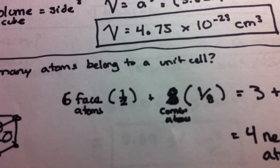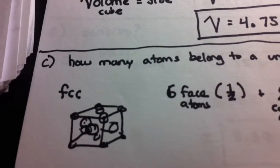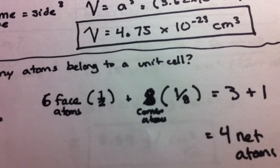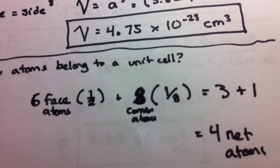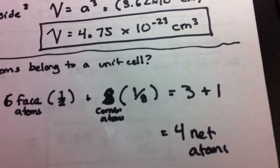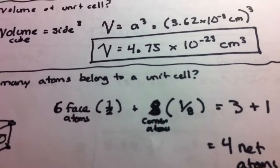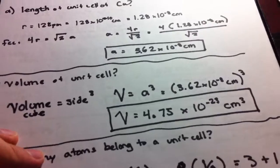And we have eight corner atoms, one, two, three, four, five, six, seven, eight. And each one will have eighth of an atom. So it's going to equal out to three plus one or four net atoms in a copper unit cell.